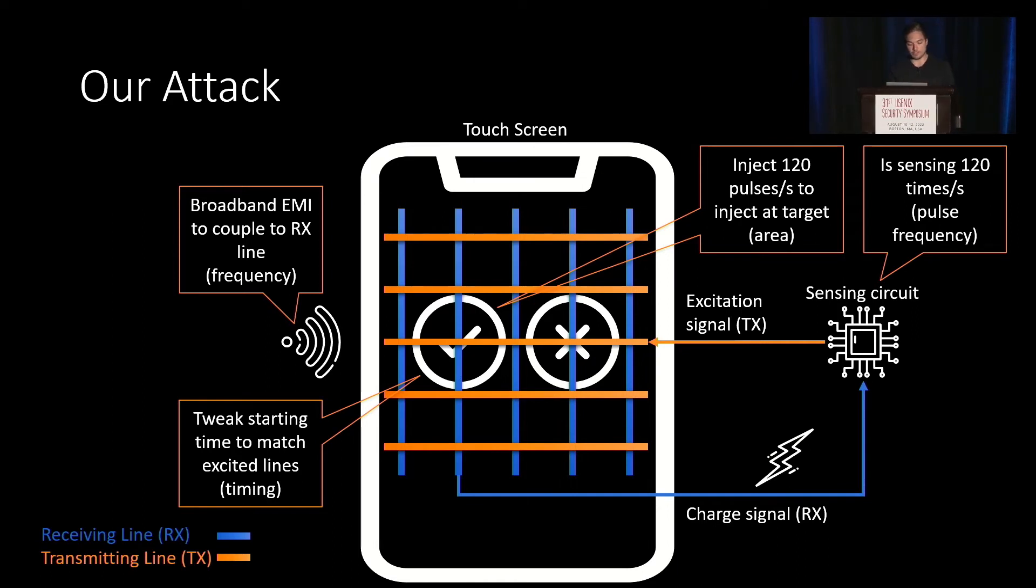This is because the EMI will inject an AC current into the receiving lines, and sometimes it will lower or higher the amount which is measured by the sensing circuit. So not every injected EMI will be detected as a touch, but eventually some will be detected, and the sensing circuit will interpret them as touch points.